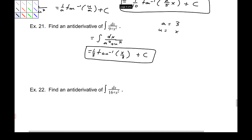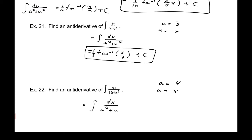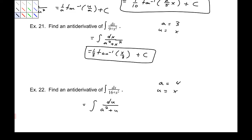Number 22: a equals 4, u equals x. Since u is x, we don't really need to make a u substitution. This is dx over a squared plus u squared. Based on our formula, this is arctangent of u over a plus c — and we also have 1 over a, so there should be a 1/4 factor there.